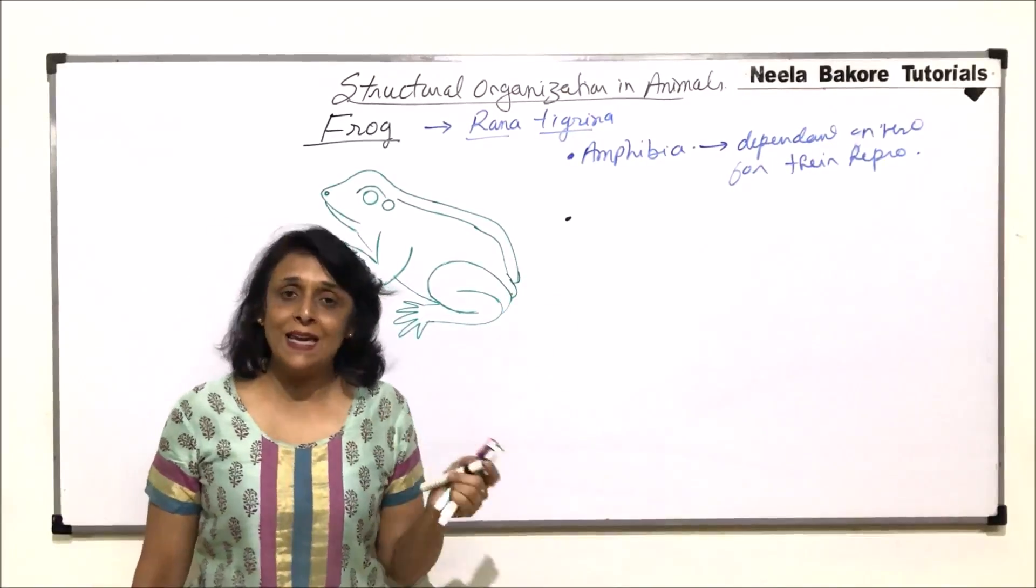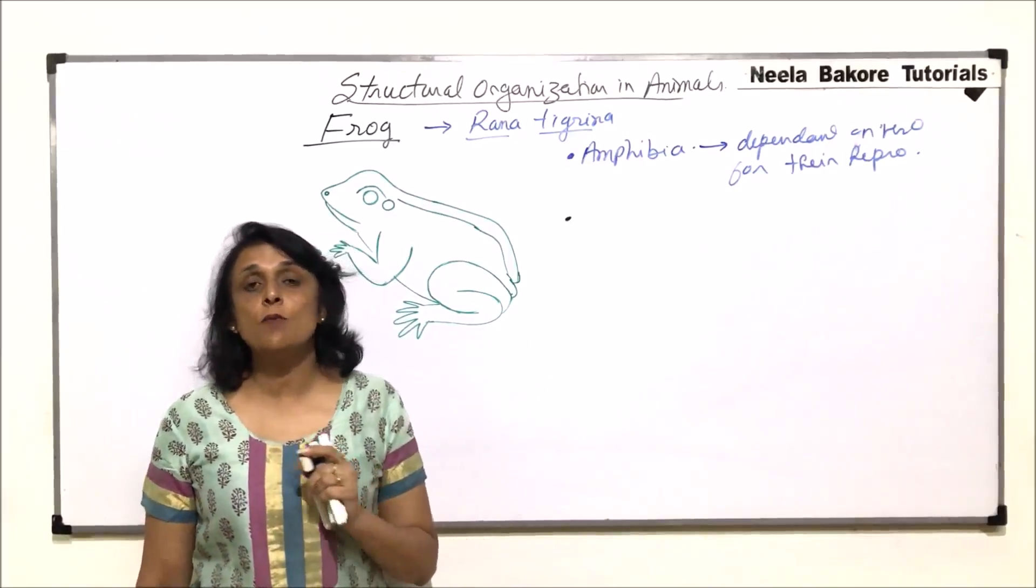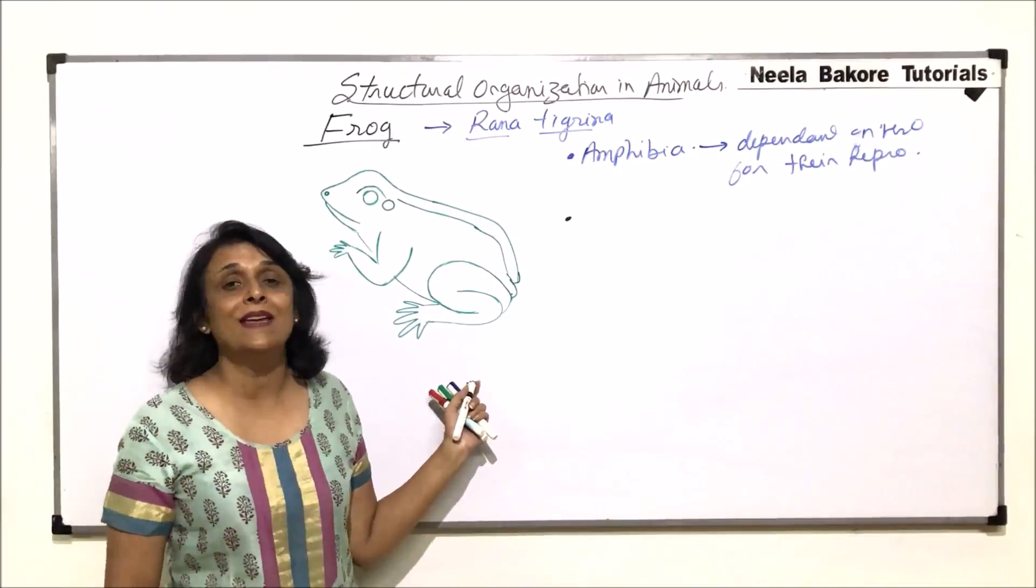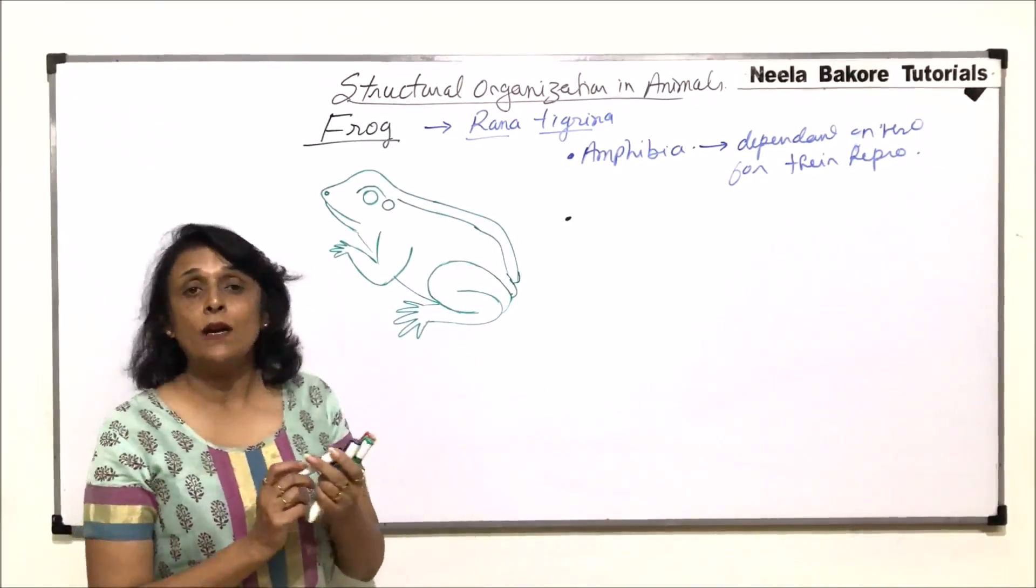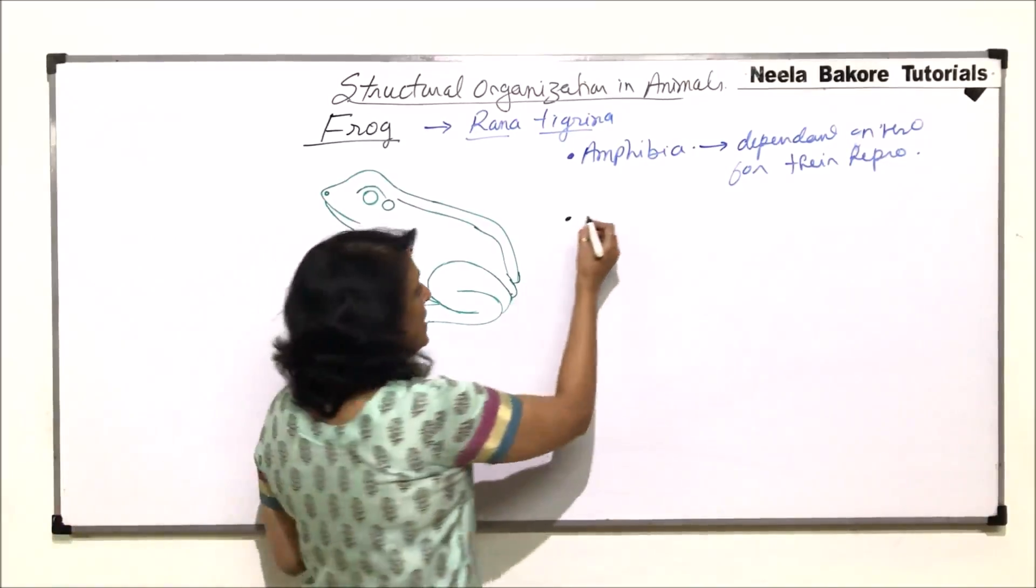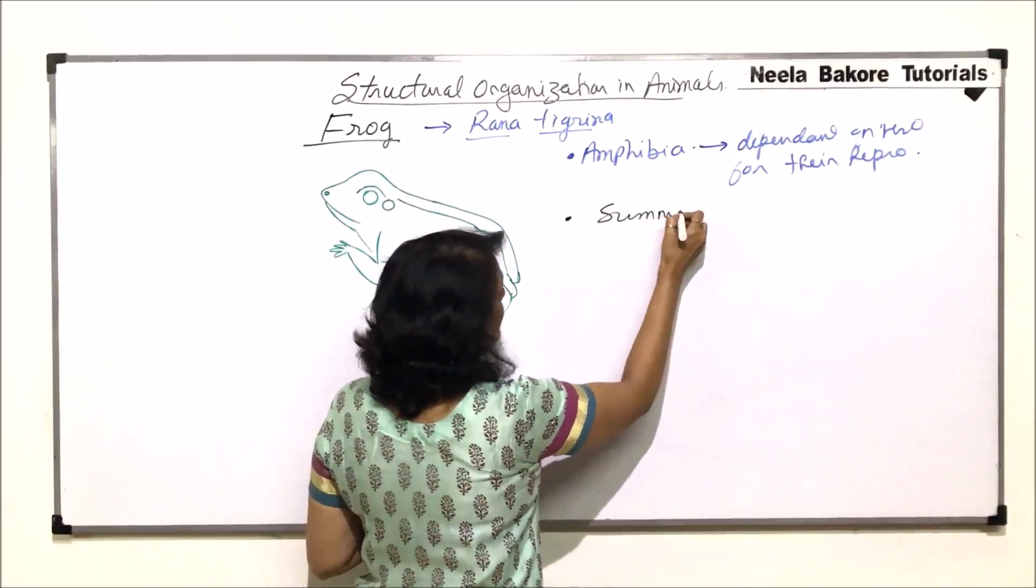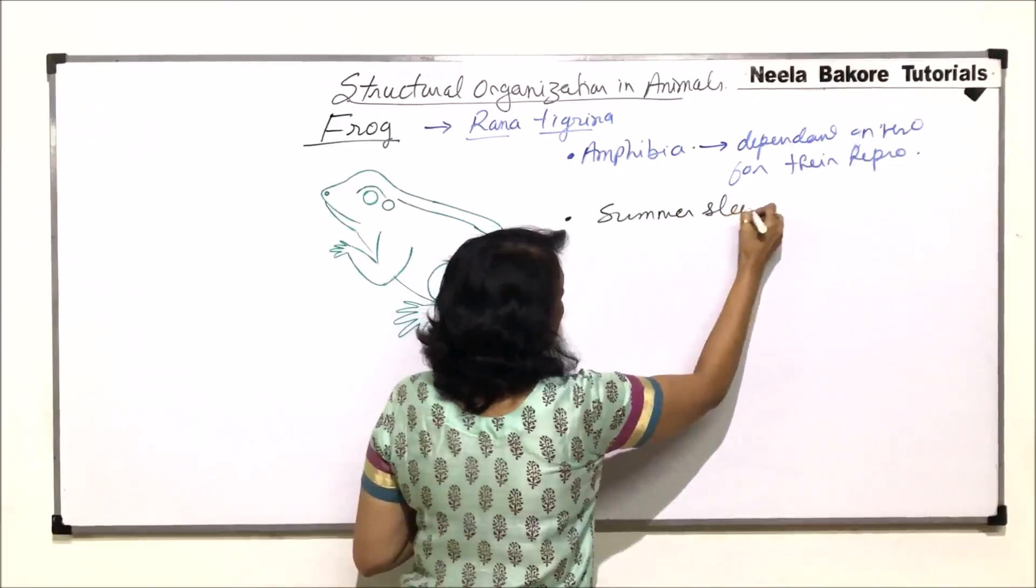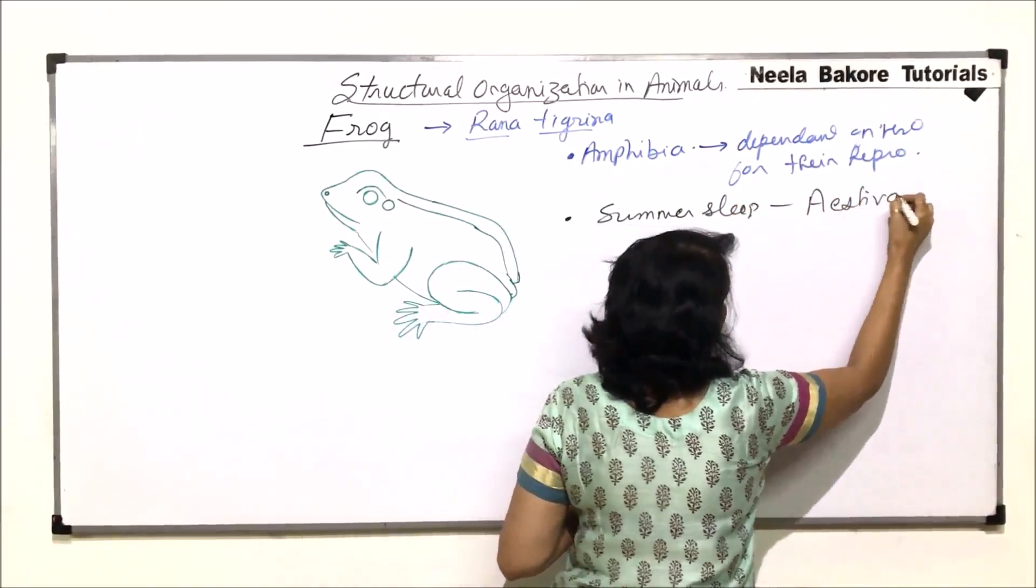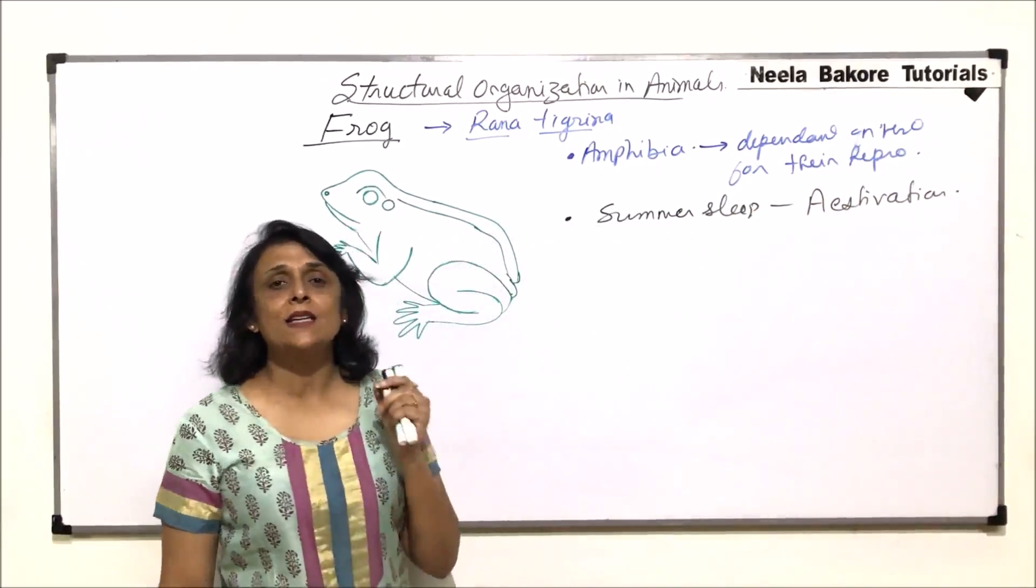Now during extreme heat, that is during extreme summer or during extreme cold conditions, we don't see frogs. They are normally found in rainy season. So where exactly are these frogs during these two seasons? In summer season, they go for summer sleep, which is technically known as aestivation. This is to avoid the extreme summer.